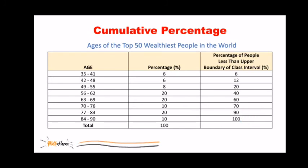But what's the importance of using cumulative percentage in the distribution? If I will ask you about the percentage of the wealthiest people under 55 years old, the answer is not 8%. Why? Because when I say under 55 years old, this also includes the intervals 42 to 48 and 35 to 41. So therefore, the answer is the cumulative percentage, which is 20%. Meaning, 20% of the wealthiest people are under the age of 55.